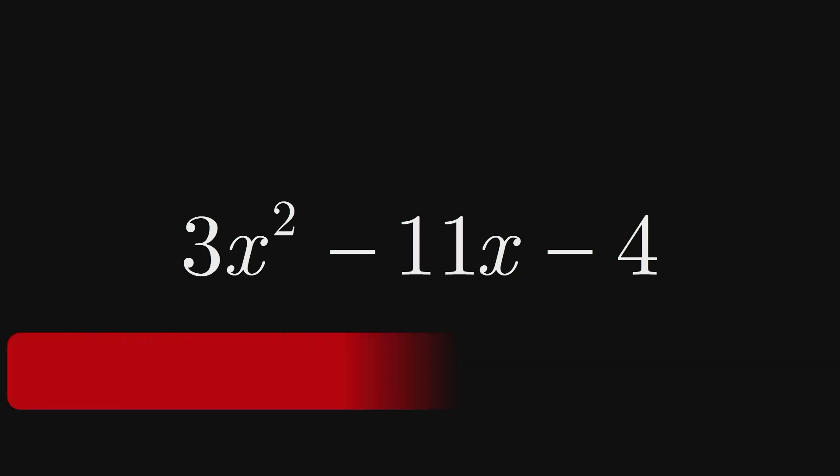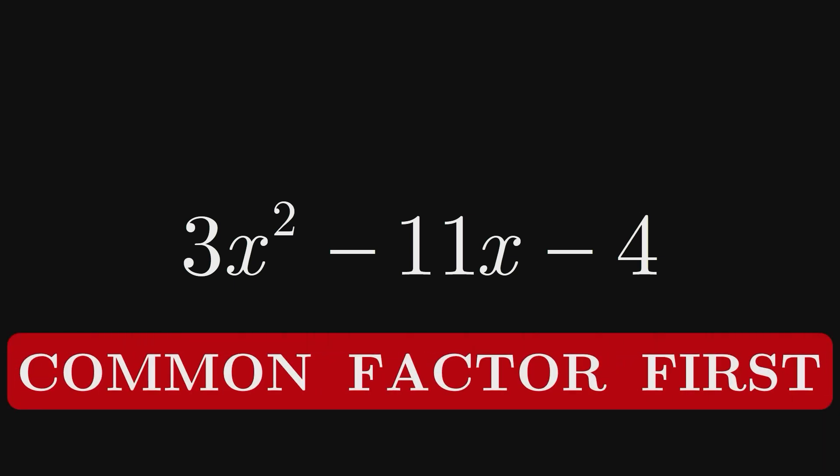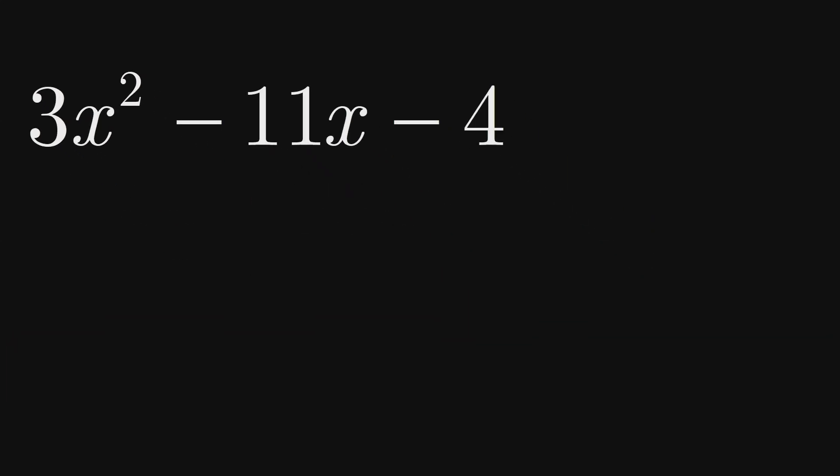Let's finish with one more example and factor 3x squared minus 11x minus 4. As usual, we attempt to common factor the expression, but again, we have a greatest common factor of 1, so we move on, looking for 2 numbers that multiply to 3 and 2 numbers that multiply to negative 4. The only whole numbers that multiply to 3 are 3 and 1.